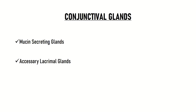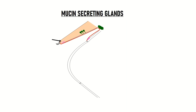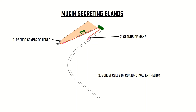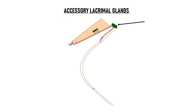The conjunctiva contains various mucin-secreting glands as well as accessory lacrimal glands. Between the eyelid margin and the subtarsal groove lie multiple infoldings of the conjunctival epithelium known as pseudo-crypts of Henle, which secrete mucin. There are also mucin-secreting glands of Manz, located in the limbal conjunctiva arranged in a ring around the cornea. Mucin is also secreted by goblet cells of the conjunctival epithelium. The accessory lacrimal glands are the glands of Krause, present in the fornices, and the glands of Wolfring, present at the upper border of the superior tarsus and lower border of the inferior tarsus.